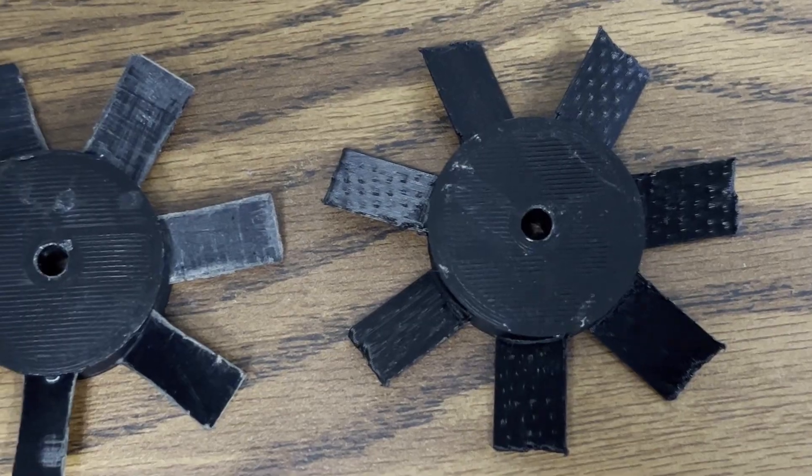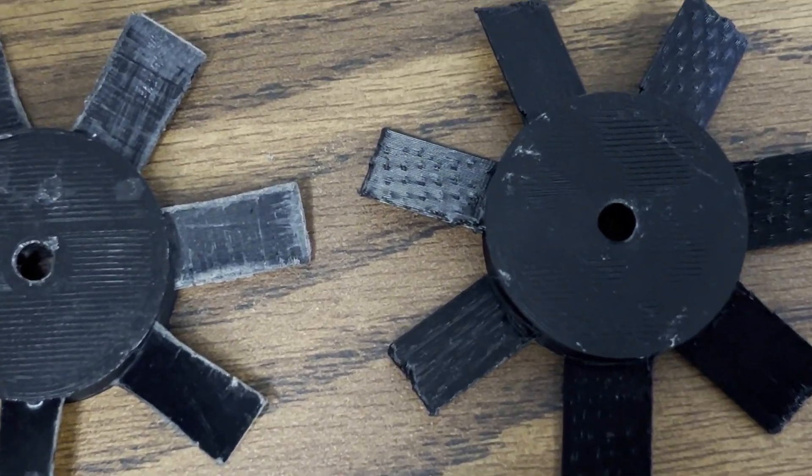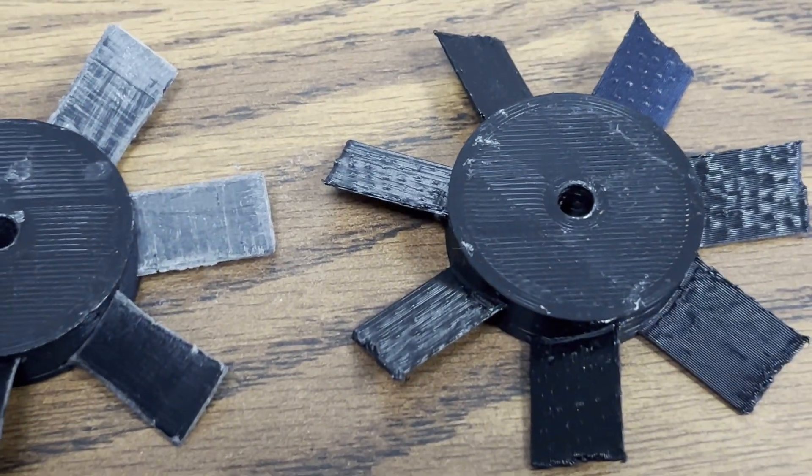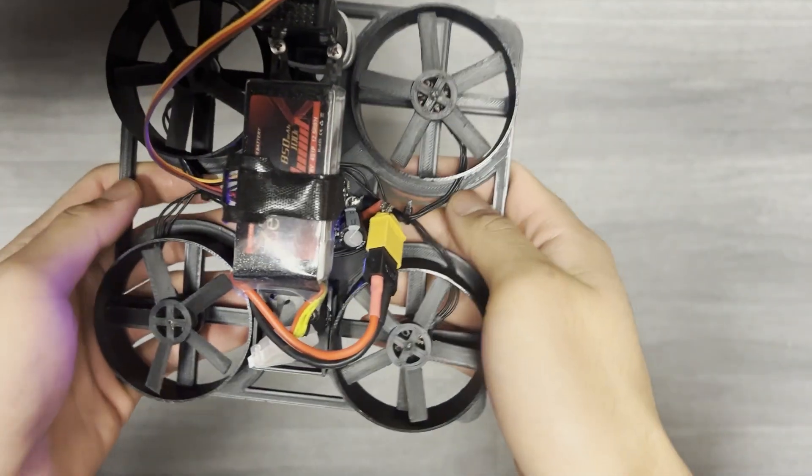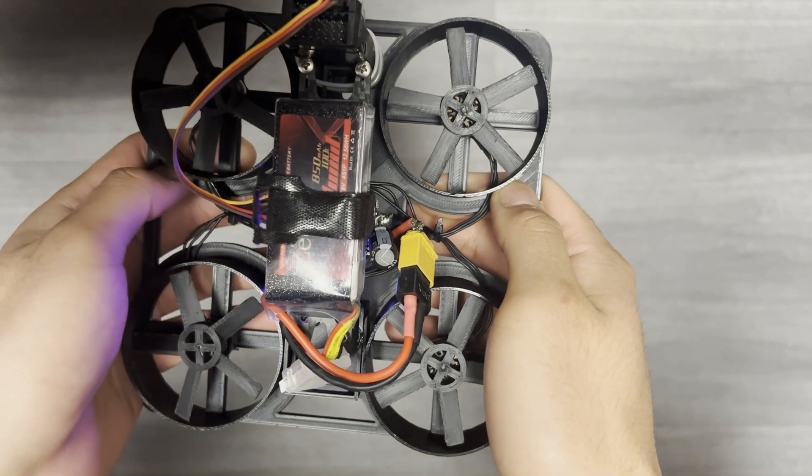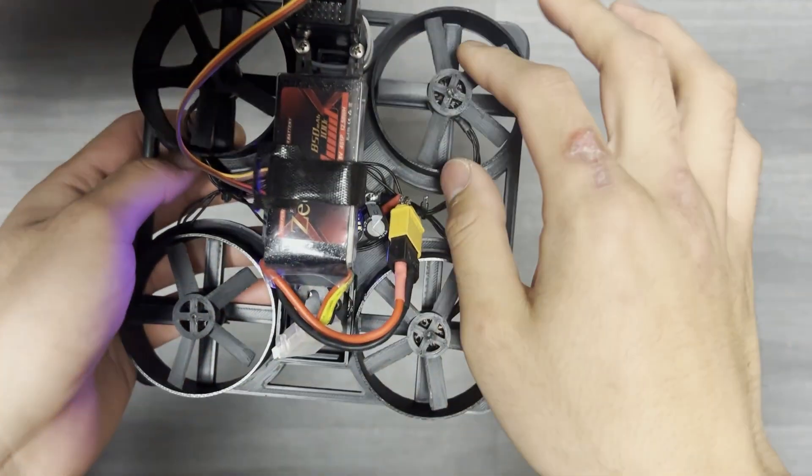These modular blades can print in a lot better precision without the supports because it just prints straight up, at least in theory. In practice, it's actually still hard to dial in blades that can fit smoothly into the fan hub, especially at this size.